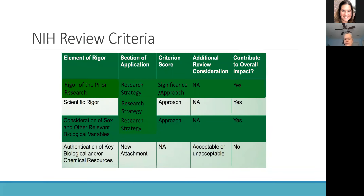Reviewers are also looking for key biologic variables — pretty much all reviewers are now aware that they need to pay attention to sex as a biologic variable and see how it's going to be handled. But there are also other relevant biologic variables: if we're talking about natural aging disease processes, patient or participant age and other comorbidities may also need to be considered. Being aware of the science and what variables somebody would want you to consider when testing a specific hypothesis is important, and those can be addressed in the rigor of the prior research if somebody's failed to address them.